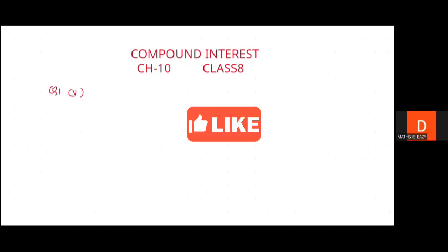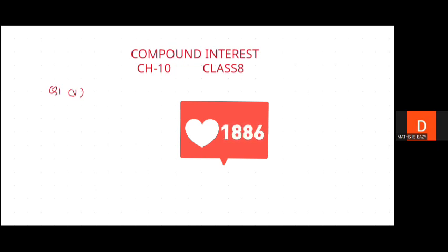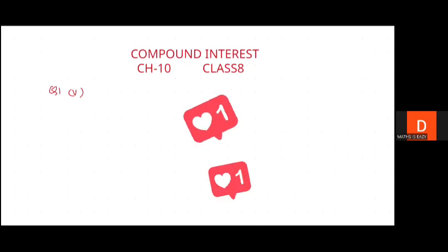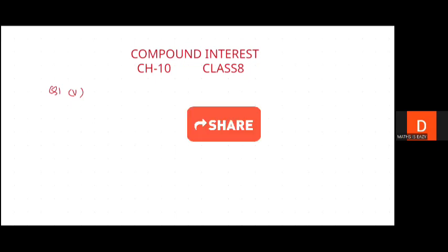So if you guys want to see the solution of earlier chapters of the same publication house, the chapter names are: Rational Numbers, Exponents, Square and Square Roots, Cube Roots, Playing with Numbers, Algebraic Expressions, Factorization of Algebraic Expressions, Linear Equations, Percentage and its Applications, Direct and Inverse Variation, Compound Interest, Probability, Quadrilaterals, Surface Area and Volume, and so on.